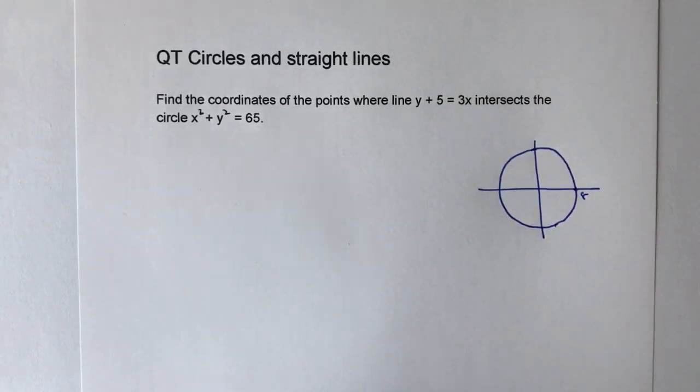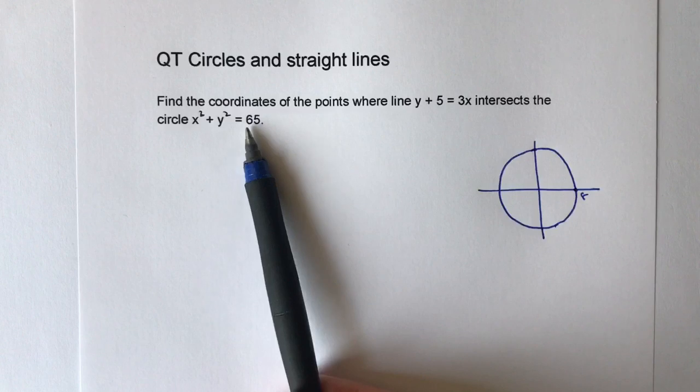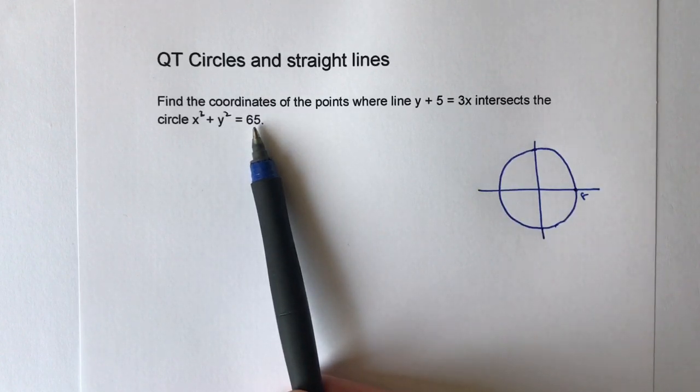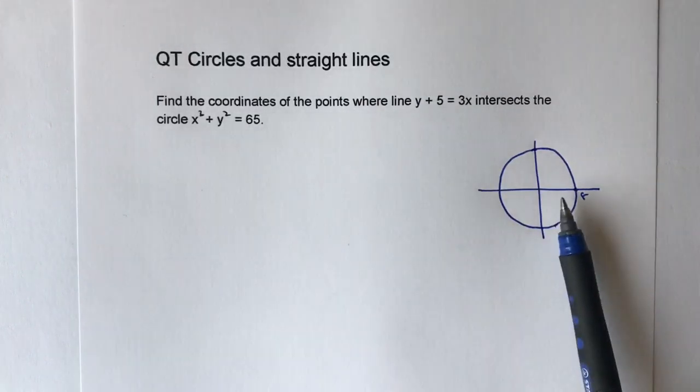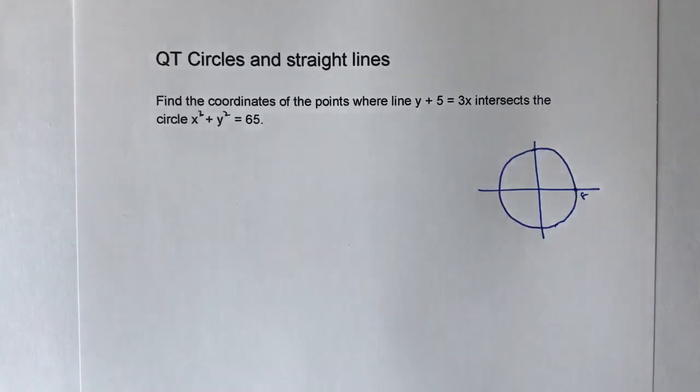Now the reason I know that is because this is x squared plus y squared equals r squared. Well, that's close enough really to 64. So therefore it means that the radius is going to be the square root of 64, which is going to be 8.